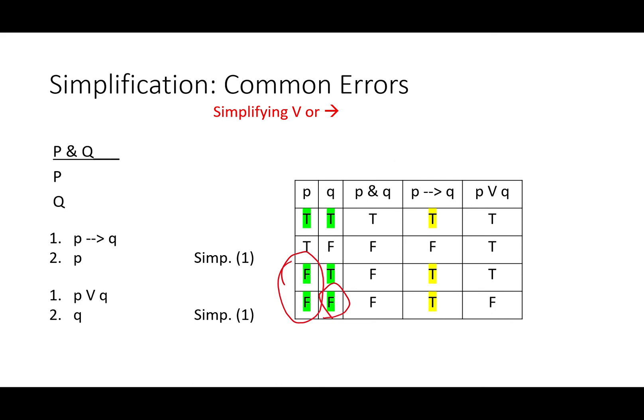How about the disjunction? Again, that first line works, but the next two do not. We've got true premises leading to possible false conclusions. That makes those invalid arguments. So don't use simplification in that way. Thanks for watching.